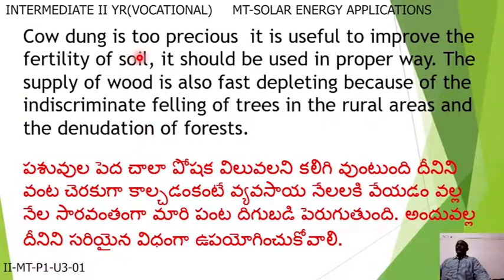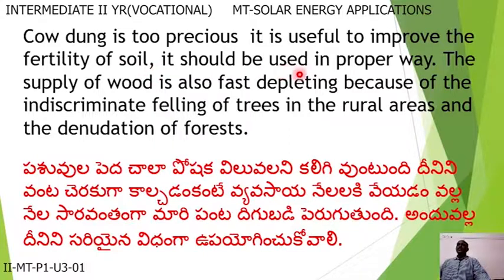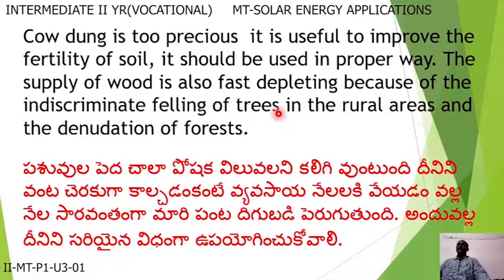Cow dung is too precious — it is useful to improve the fertility of soil and should be used in the proper way. The supply of wood is also fast depleting because of the indiscriminate felling of trees in rural areas and the denudation of forests.